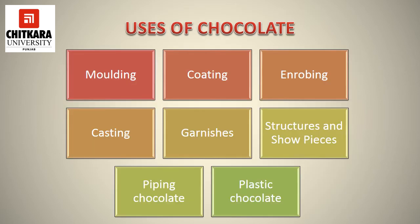Chocolate is used for many purposes, including creating molds with chocolate, coating of products, various baked products, enrobing, casting, garnishes, making structures and show pieces of chocolate, piping the chocolate, and making plastic chocolate.